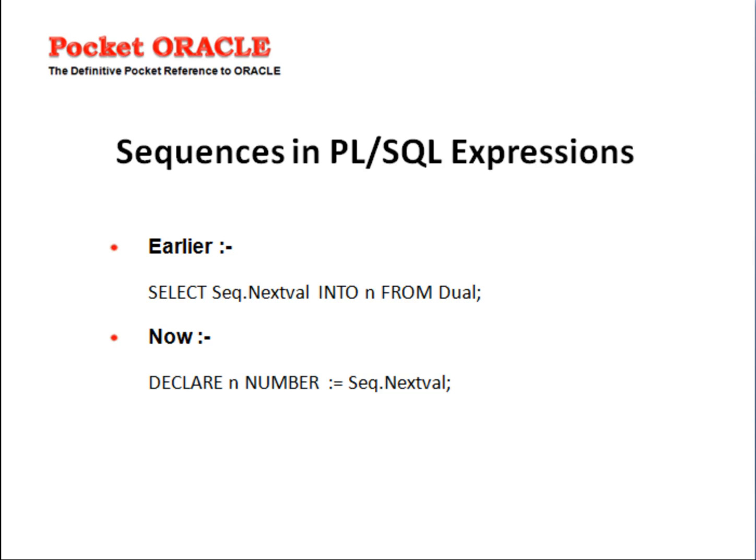actually run a SELECT statement like 'SELECT sequence.NEXTVAL INTO a variable FROM dual' to get the sequence into a variable. Now it's pretty simple — just declare a variable and assign sequence.NEXTVAL to that variable, as shown here. That's pretty simple.